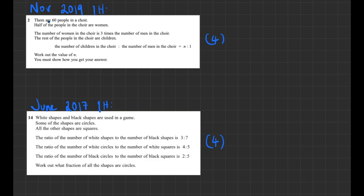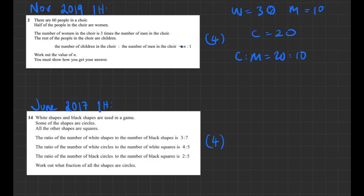From November 2019, a question about people in a choir: there are 60 people, half are women, so 30 women. The number of women is three times the number of men — so 10 men. The rest are children, and you need to write children to men in the form n to 1. With 30 women, 10 men, and 60 total, there are 20 children. The ratio 20 to 10 simplifies to 2 to 1, so n = 2.